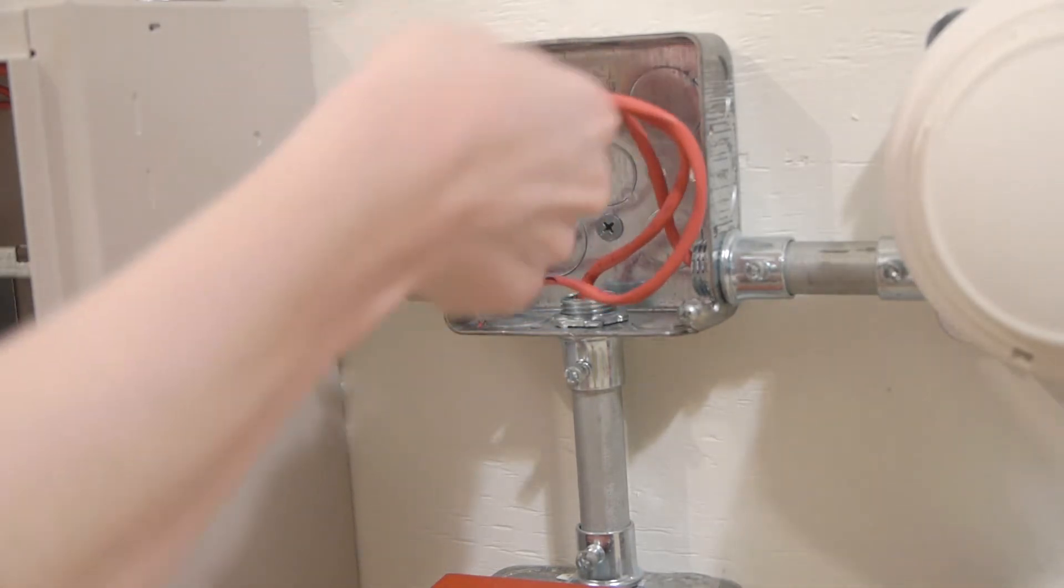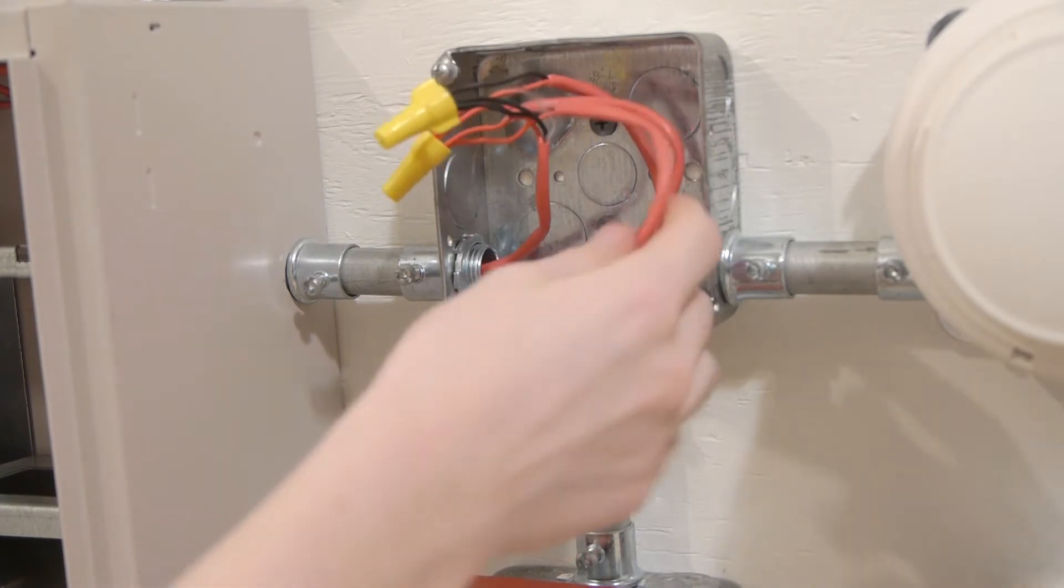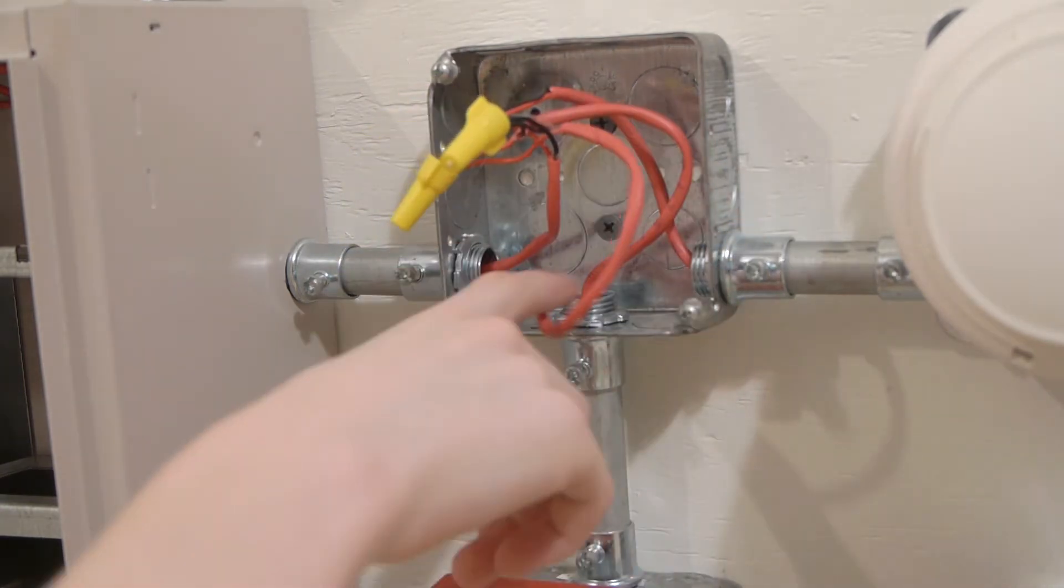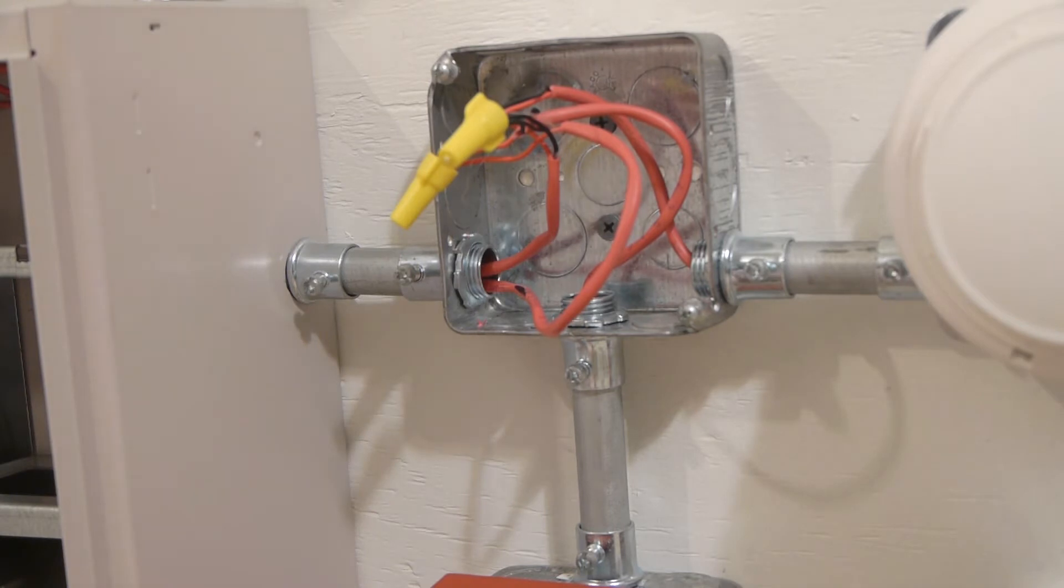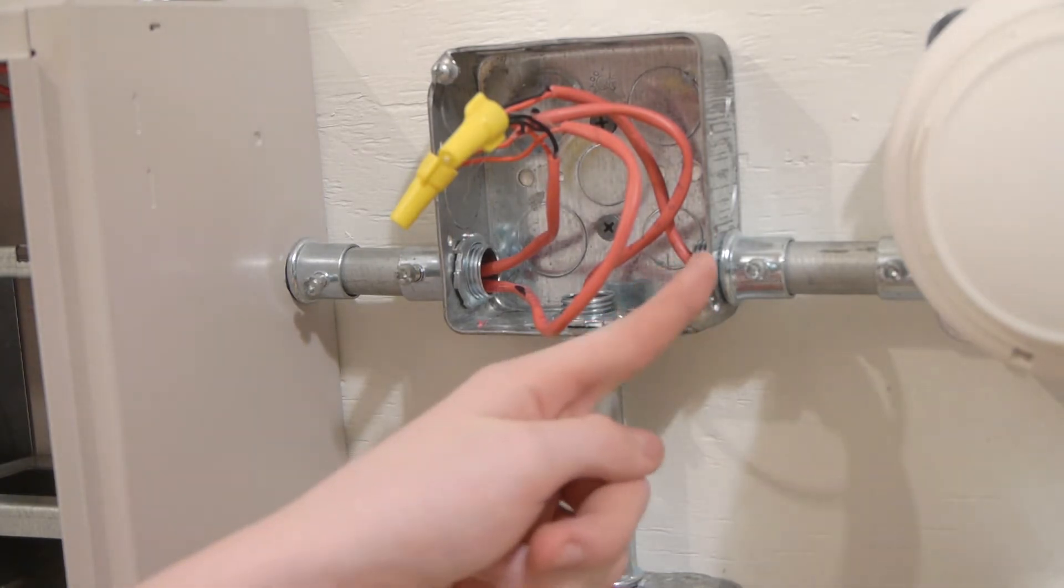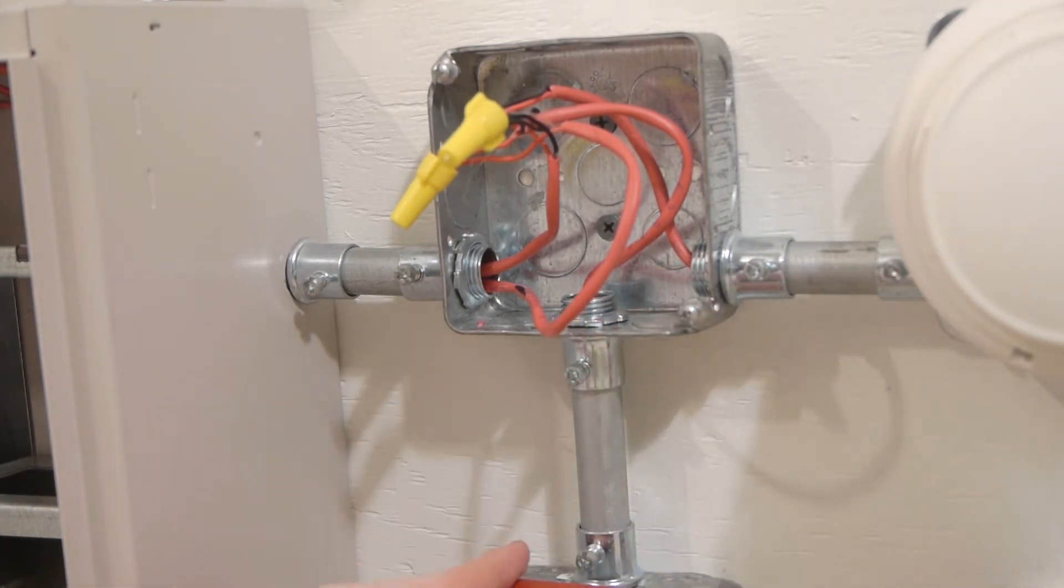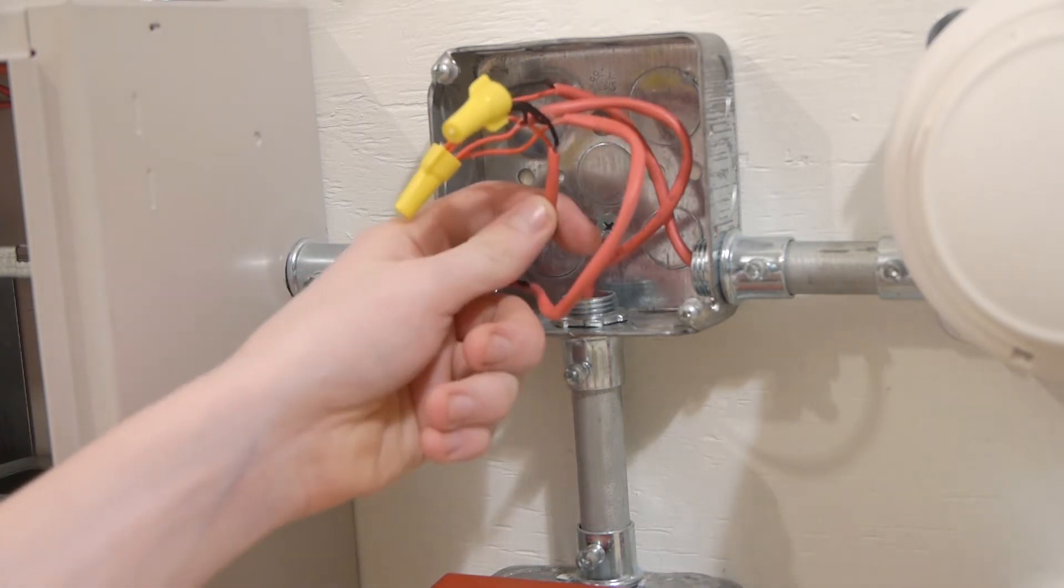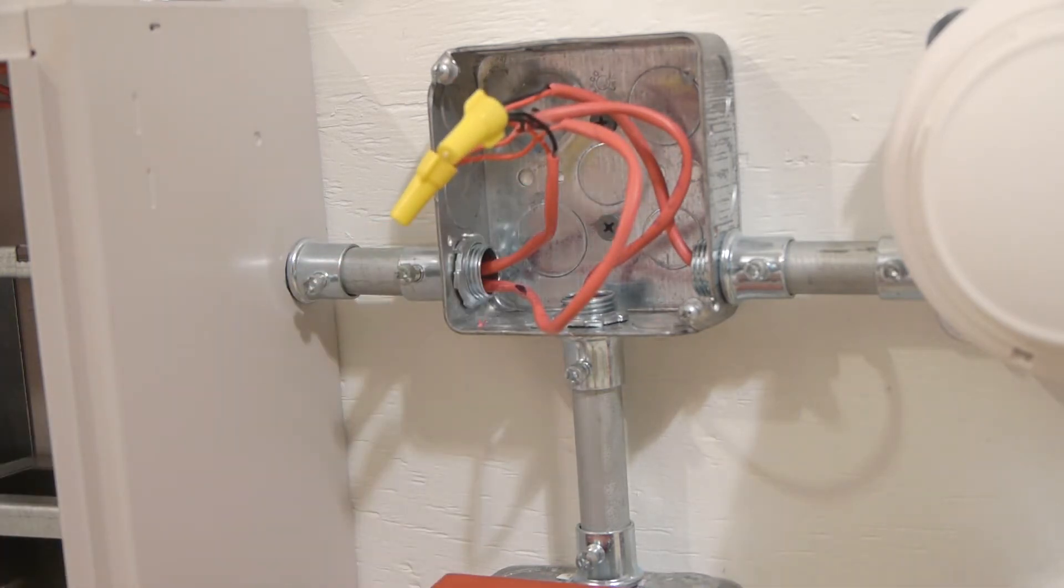Now this wire right here with the black mark on it is coming from the SLC terminals on the panel, and all the rest of the wires are going to branches of the SLC on the system. One of them goes over to these two devices, one of them goes down to the other three, and one of them goes back to the other side of the board that has a couple devices on it.